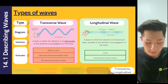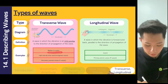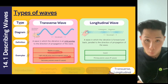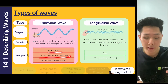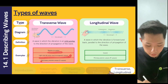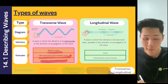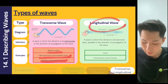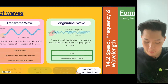Examples of transverse waves include ripples on water, light waves — which are a combination of electricity and magnetism — and secondary seismic waves. Examples of longitudinal waves include sound and primary seismic waves.